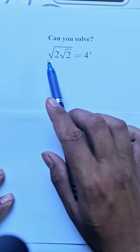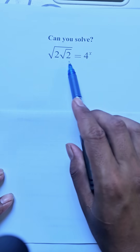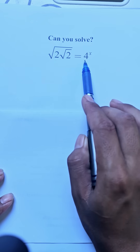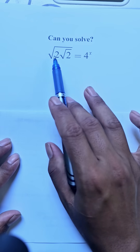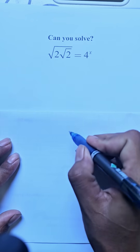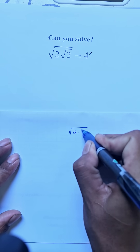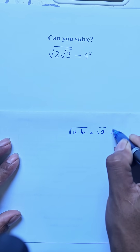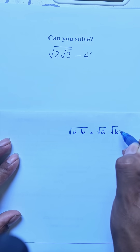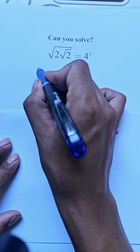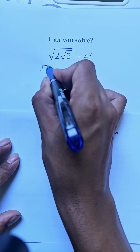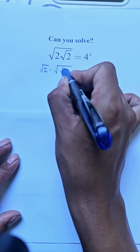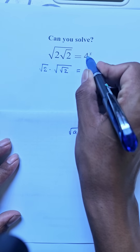Can you solve this equation: square root of 2 times square root of square root of 2, equal to 4 to the power a? If you know that square root of (a times b) equals square root of a times square root of b, so here we can write square root of 2 times square root of square root of 2.